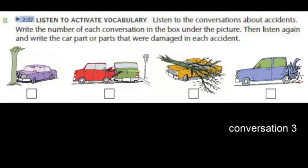Conversation 3. I can't drive my car. I had an accident. I'm sorry. What happened? The brakes failed and I hit a tree. Oh no. Was there much damage? Well, I'll have to replace the bumper and the right headlight.